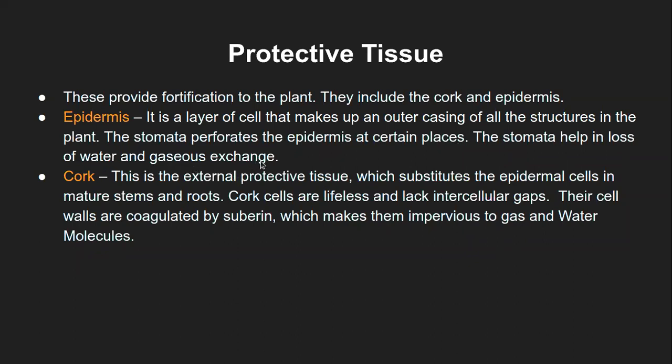When roots are absorbing a lot of water, it goes toward the leaf, and from the leaf, if it is in excess, it will go out through the leaf structure in vapor form. Also, when carbon dioxide is taken by the leaf structure, it is exchanged through the stomatal structure through the epidermal layer. So that is the main function of the epidermis: apart from protection, it also serves as an exchange medium for water as well as gases.